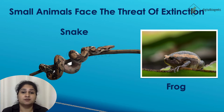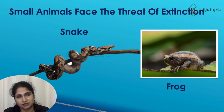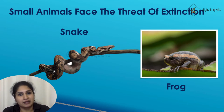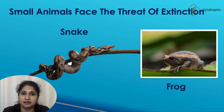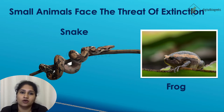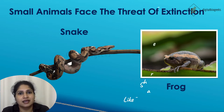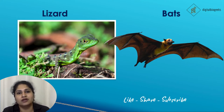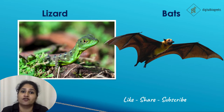Like bigger animals, small animals also face the threat of extinction. At times we kill snakes, frogs, and lizards without realizing their role in the ecosystem. Snakes maintain a balance in the food web — a snake is both a prey and a predator, feeding on mice and other rodents that cause damage to crops. Frogs eat insects and are also prey for larger animals. Lizards also eat insects and are prey for larger animals. Bats help to disperse and pollinate hundreds of varieties of plants.